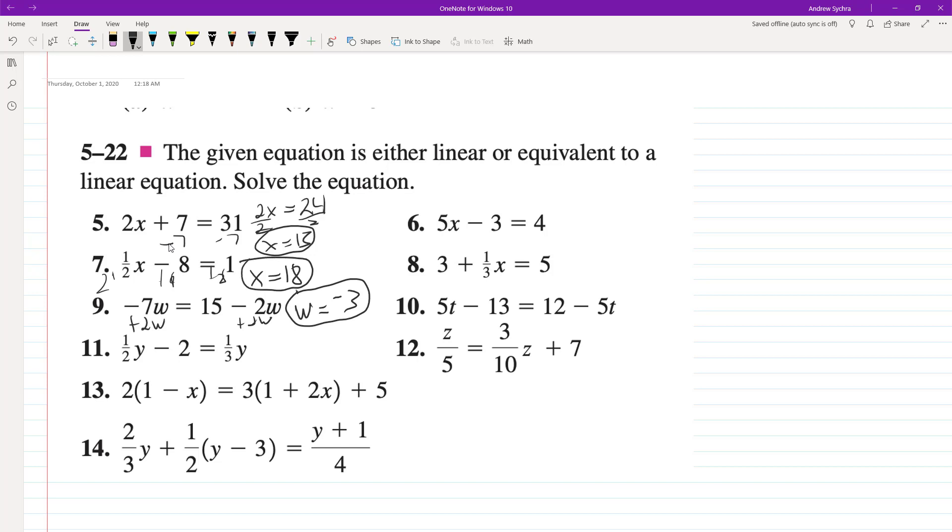Alright, starting here, subtract 1 half from 1 third. So that's going to be equal to 2 sixths minus 3 sixths. So negative 1 third is equal to negative 2. Divide by negative 1 third, we get y is equal to positive 6.